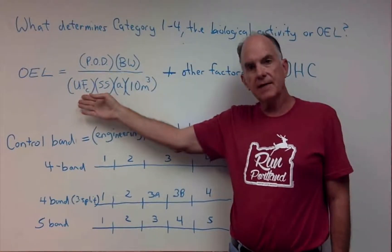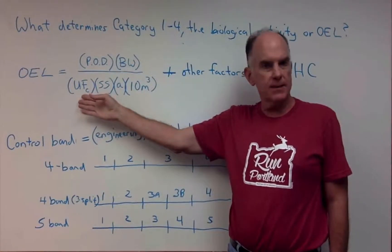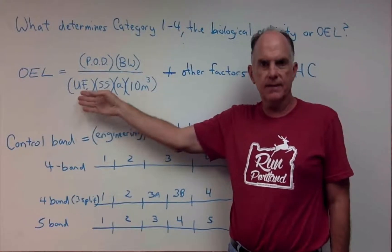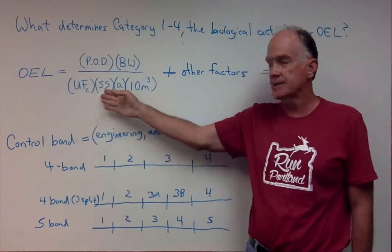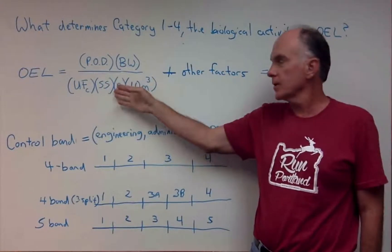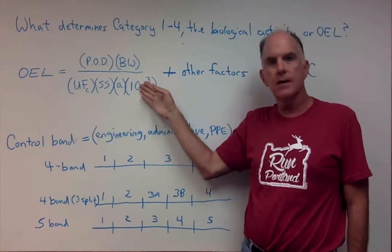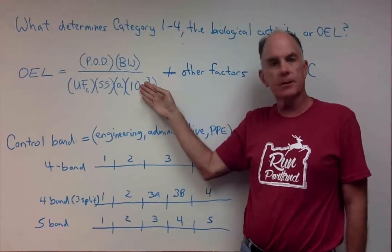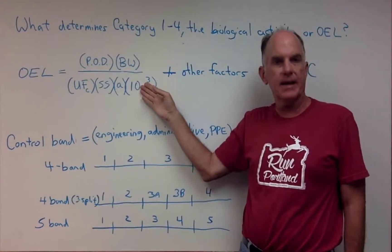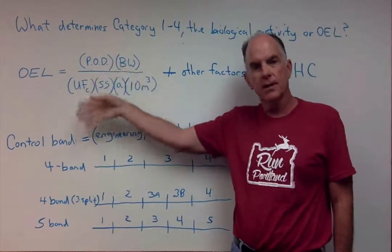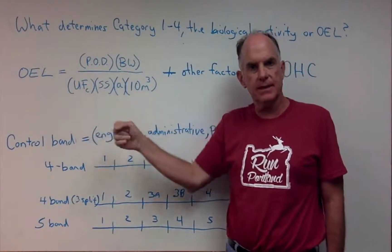And then that's divided by a composite uncertainty factor, and that's a whole other show we'll talk about. That's times steady state times absorption divided by 10 cubic meters, which is the number of cubic meters of air that you would breathe in an eight-hour work shift. So it's important to understand that OELs are based on an eight-hour work shift.